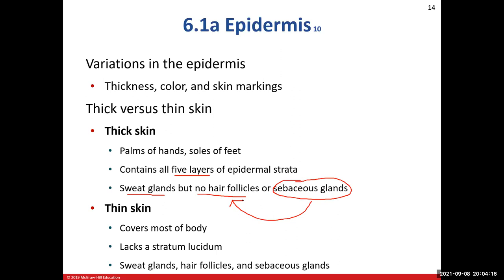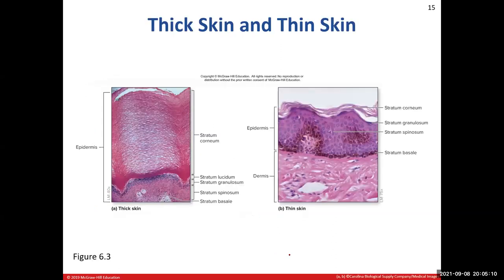Thin skin is everywhere else on your body. It has no stratum lucidum present, but it does have sweat glands — you experience that when it's 95 degrees outside and sweat is pouring down your face. Thin skin also has hair follicles, and if you have hair follicles, then you have sebaceous glands. Sebaceous glands create a thicker, oily secretion called sebum — that's why sometimes a person's hair looks greasy, from the sebum the sebaceous glands have produced.